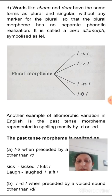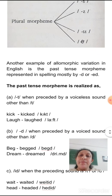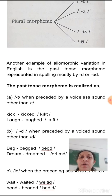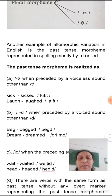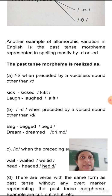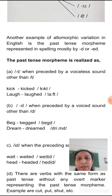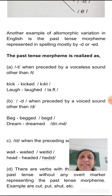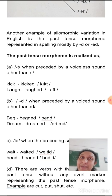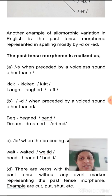Another example of allomorphic variation in English is the past tense morpheme, represented in spelling as 'd' or 'ed' for regular verbs. The past tense morpheme is realized as /t/ when preceded by a voiceless sound other than /t/. For example: 'kick' → 'kicked', 'laugh' → 'laughed' — preceded by the voiceless sounds /k/ and /f/ respectively.